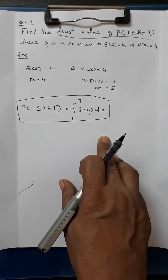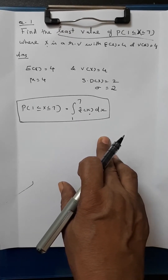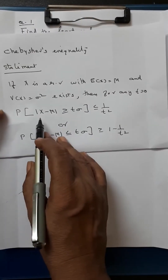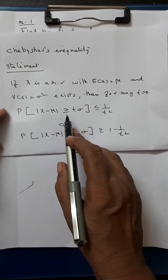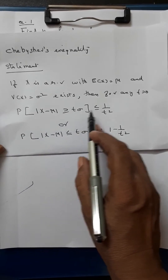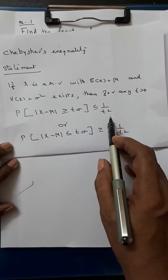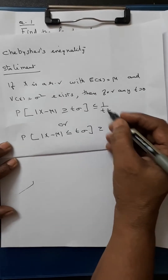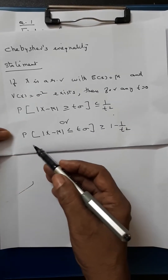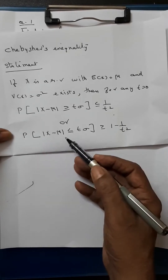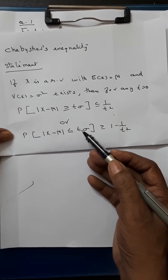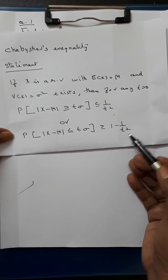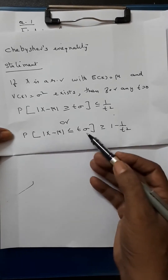In Chebyshev's inequality we have two expressions. The first is P(|x − μ| ≥ tσ) ≤ 1/t², which gives an upper bound. The second is P(|x − μ| ≤ tσ) ≥ 1 − 1/t², which gives a lower bound.